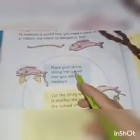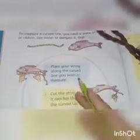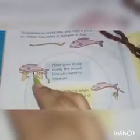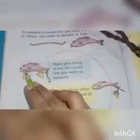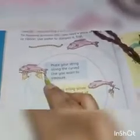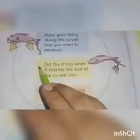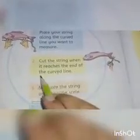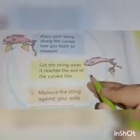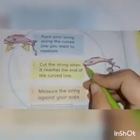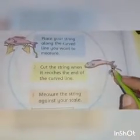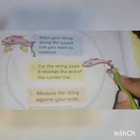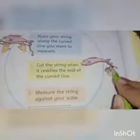Point one: place your string along the curved line you want to measure. Here we want to measure a fish with the help of string — you have to place your string along the curved line. Point two: cut the string when it reaches the end of the curved line. When we are going to measure something, we put a string at the first edge of the thing and go to the second edge.